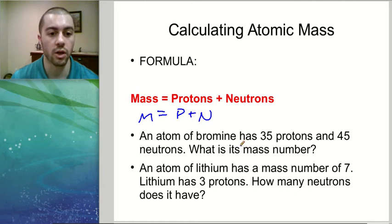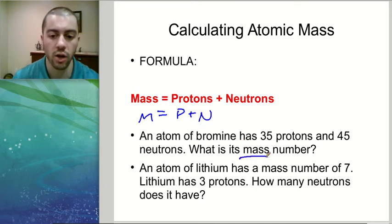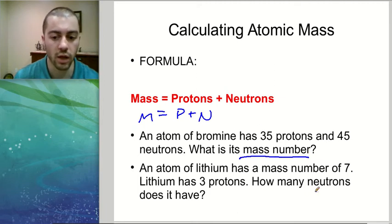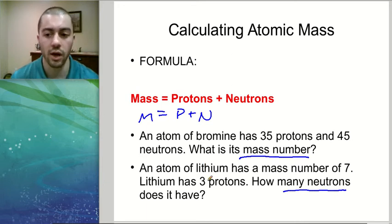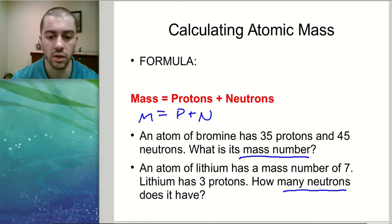Pause the video and use this formula to try and calculate the first question: the mass of an atom of bromine with a given number of protons and neutrons. For the second question, calculate how many neutrons an atom of lithium would have given its mass and number of protons.